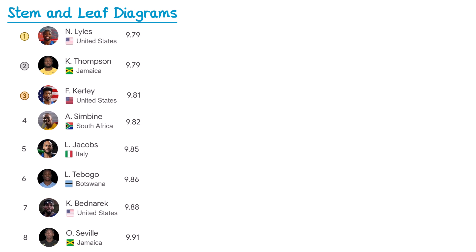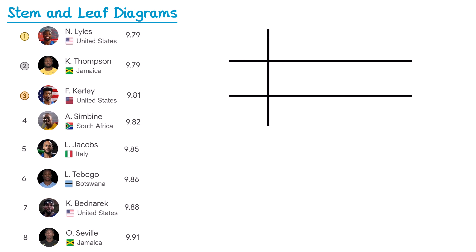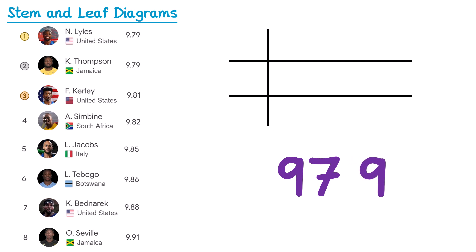Next we'll draw one more stem and leaf diagram with a slight difference. These are the men's 100m final times from the recent Olympics — each time is given as a decimal to two decimal places. Starting with the lowest time: Noah Lyles won gold in 9.79 seconds. You can't place a decimal point in a stem and leaf diagram, so we write 9.79 as 979. The leaf must be one digit, so the stem is 97 and the leaf is 9.